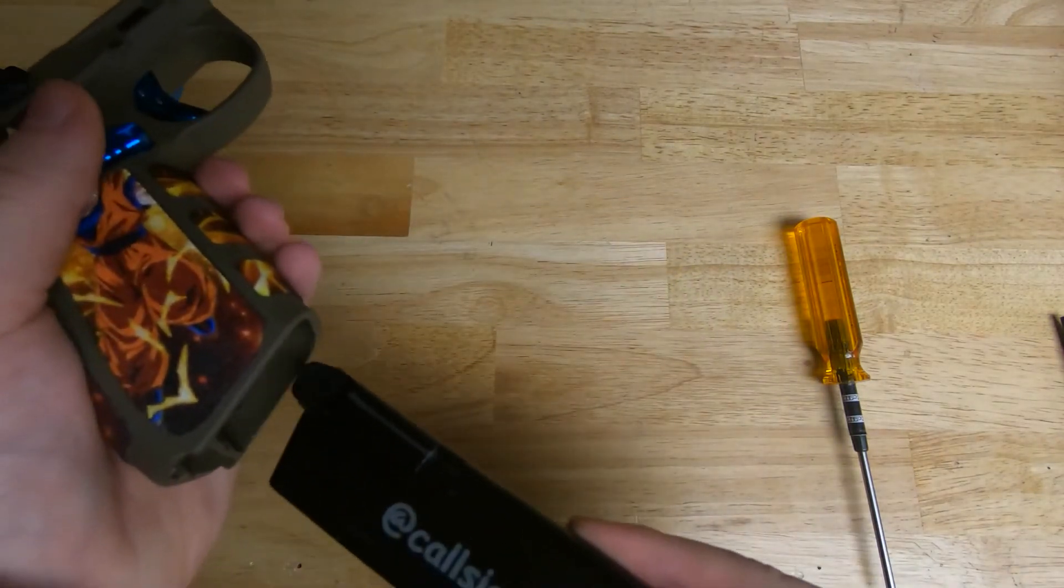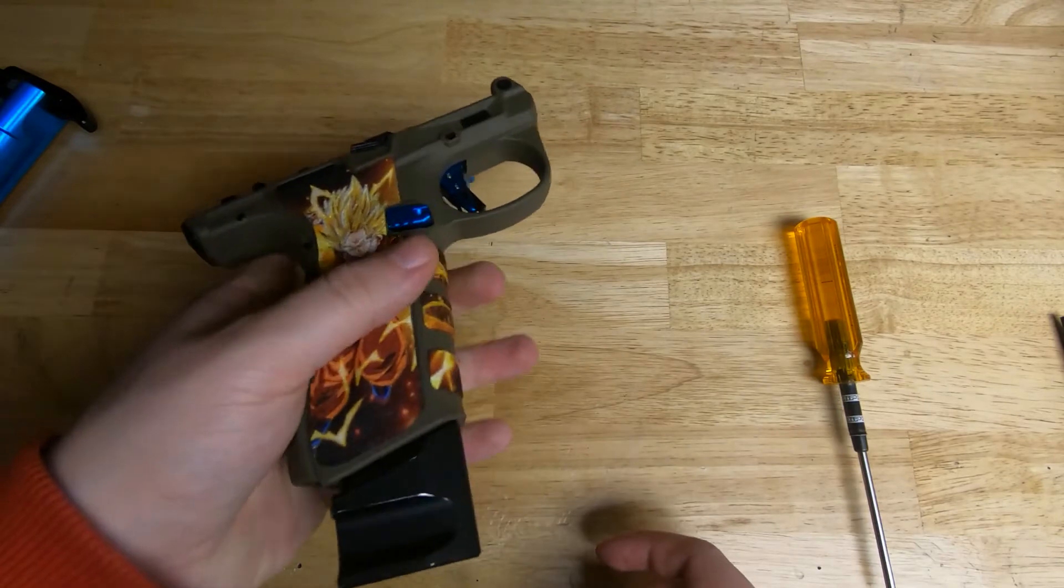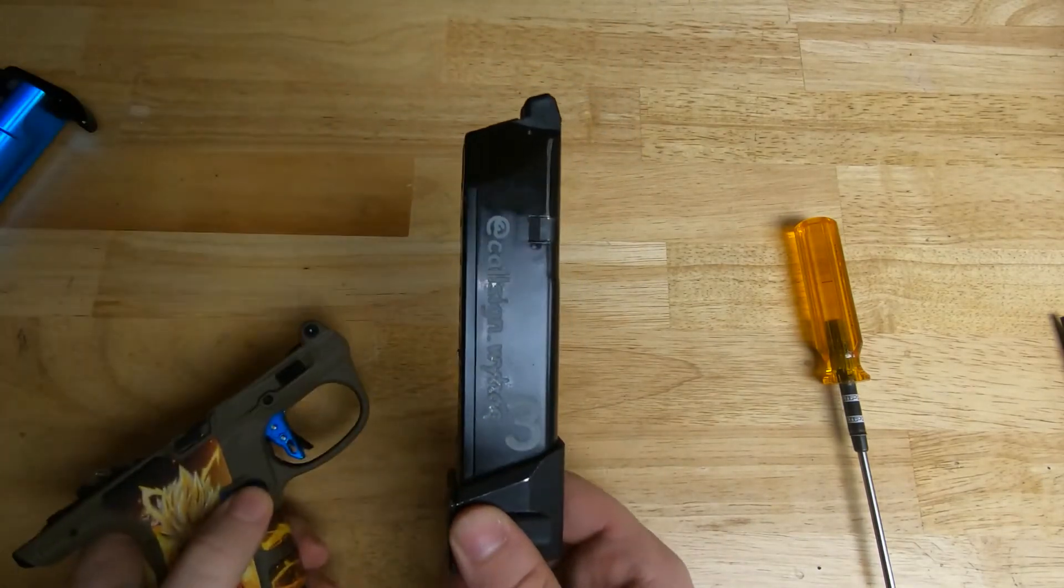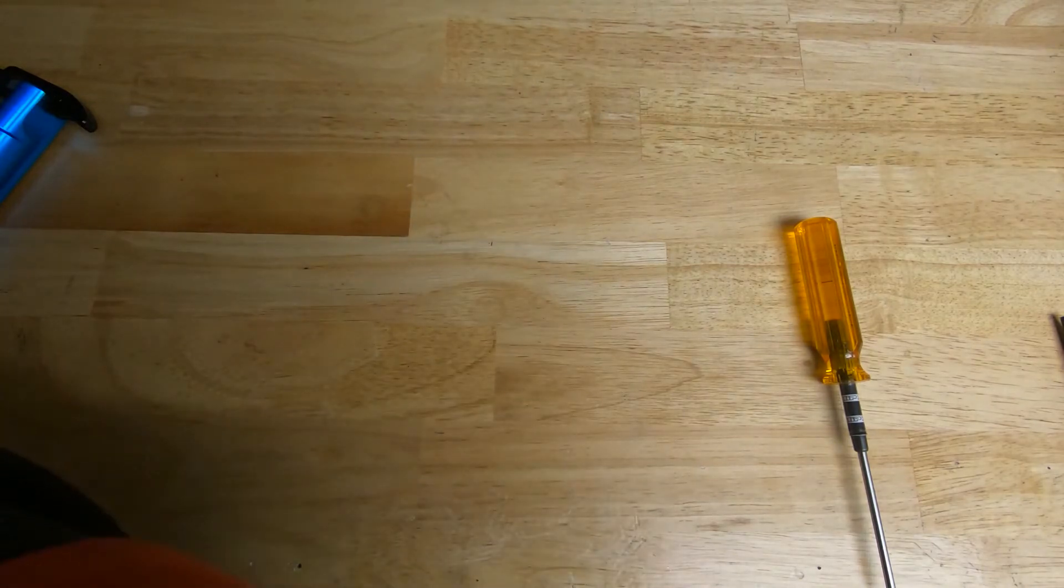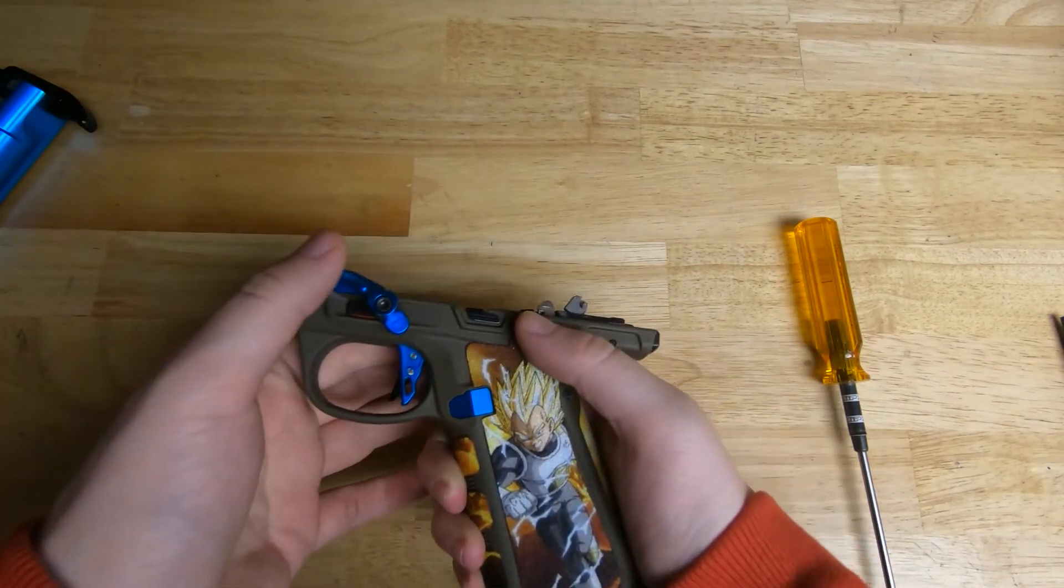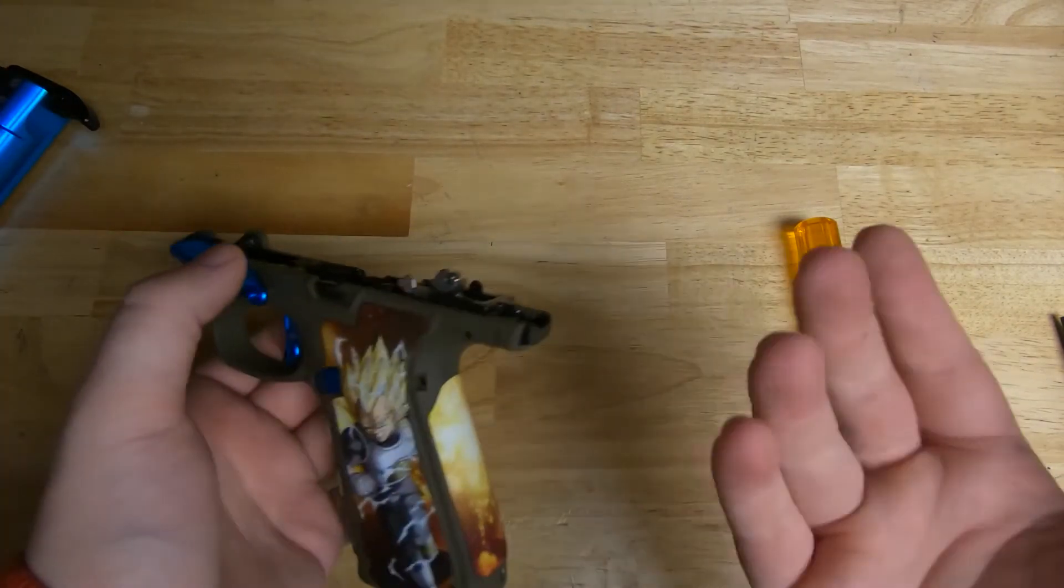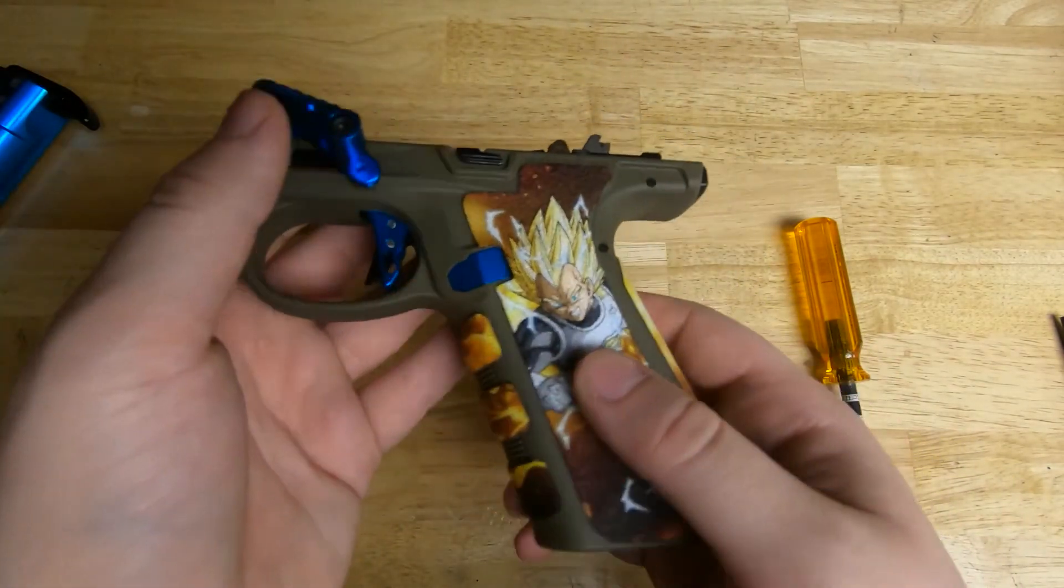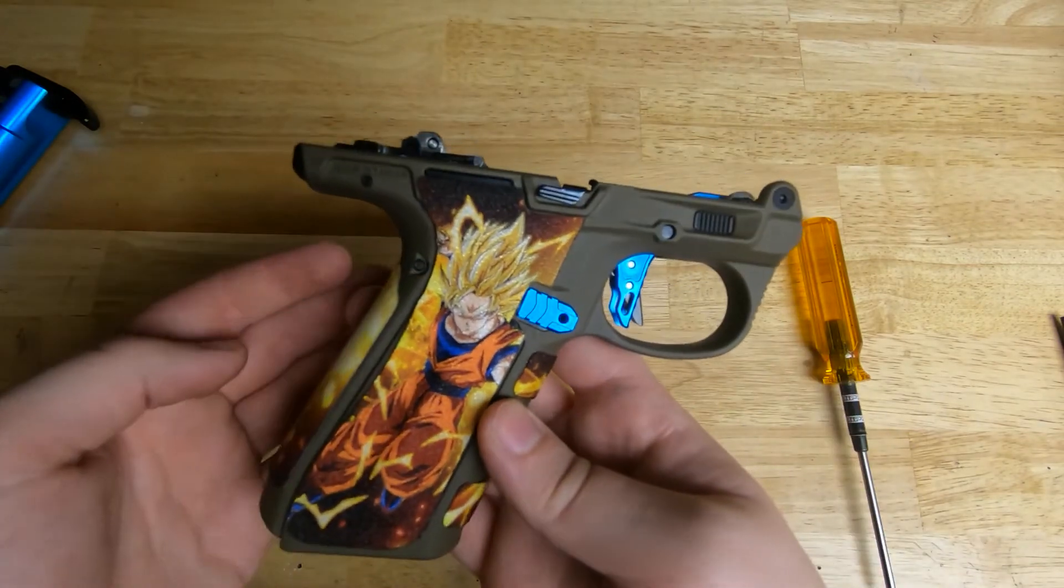If you put the magazine in the gun, you can just press this button right here and your magazine will fall free. You're all good to go. That's how you do that. You just put the slide back on and you are good to go. I hope that was useful for you. Have a nice day. Adios.